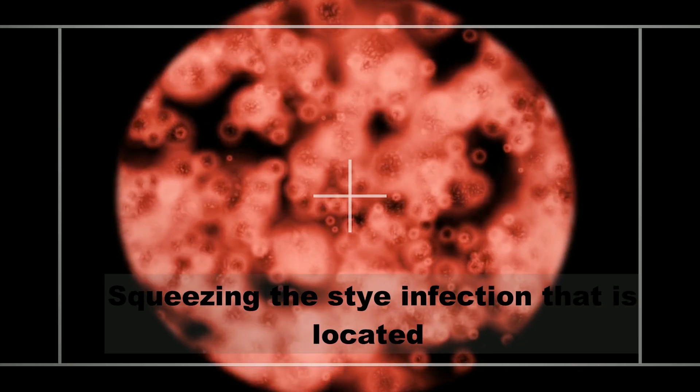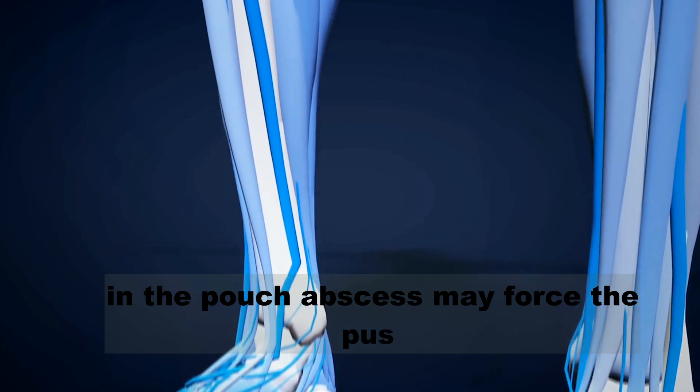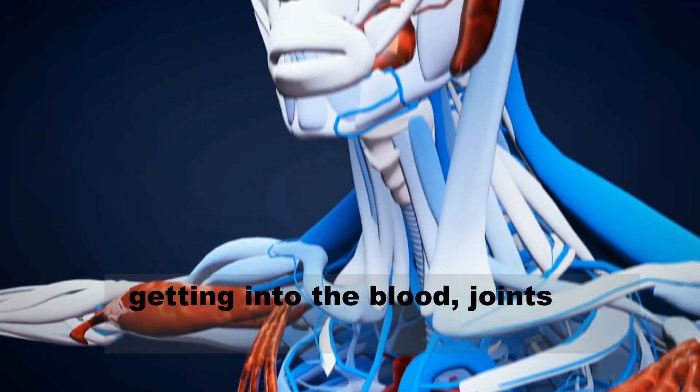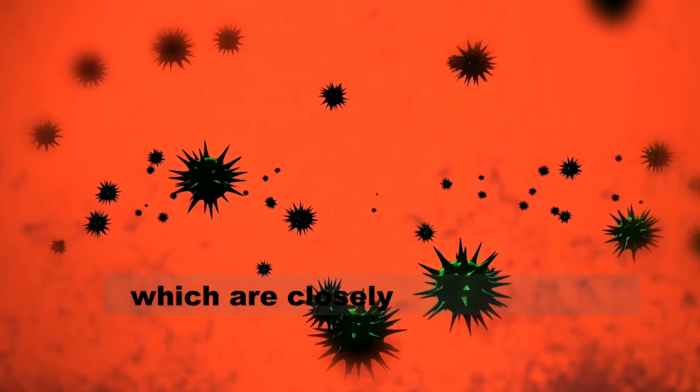Squeezing the stye infection that is located in the abscess pouch may force pus into the blood, joints, and veins, which are closely linked around the area.